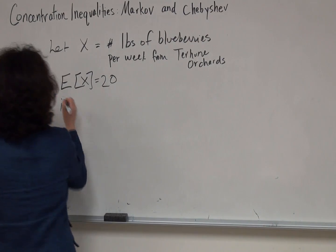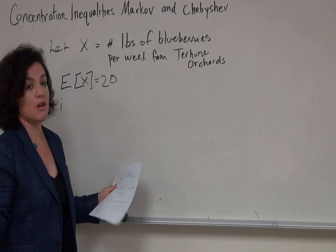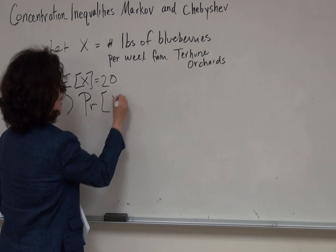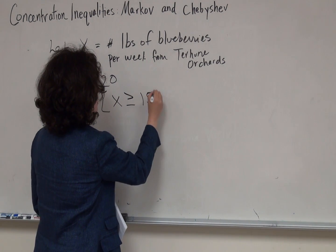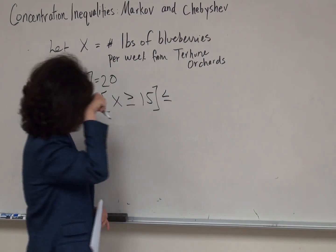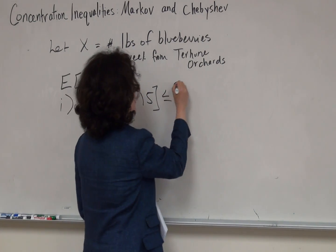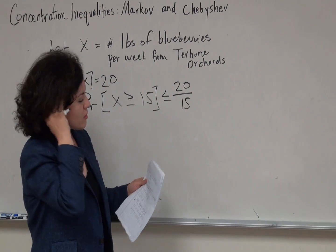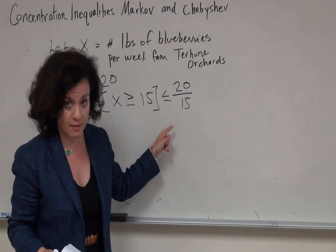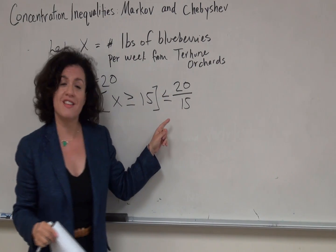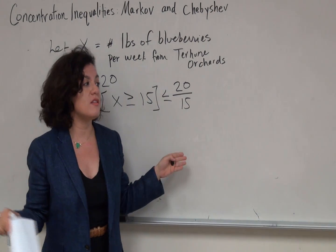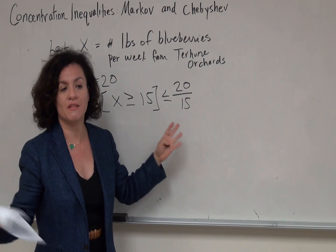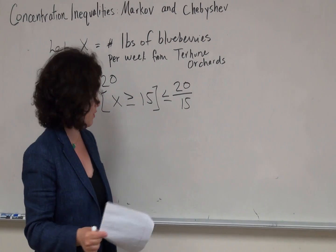Our first question is: what is the probability that we have greater than 15 pounds? The probability that x is greater than or equal to 15 is just the expectation 20 divided by 15, which is 4/3. This is not helpful because probabilities must be at most 1, and this is greater than 1. We've done nothing wrong, but it shows that Markov's inequality isn't always the right tool.